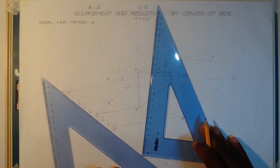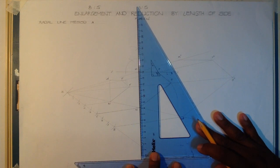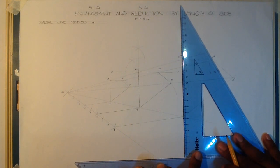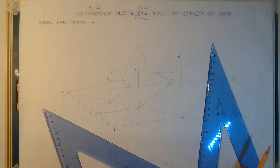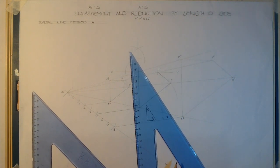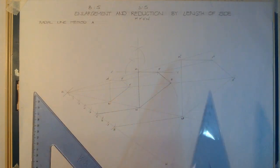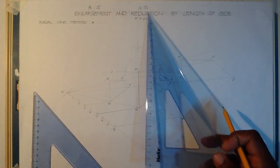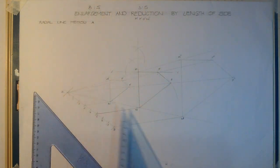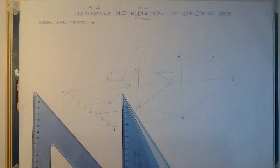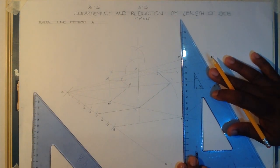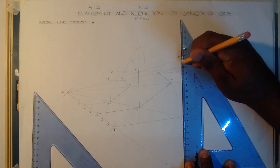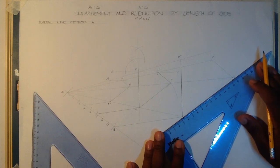You can just join the points, but drawing the line parallel from MN gives us the accuracy we are looking for. With that done, we have now enlarged our shape using the ratio 8 to 5 and reduced it using the ratio 3 to 5. To conclude, you darken your reduced shape, your enlarged shape, and also the original shape.